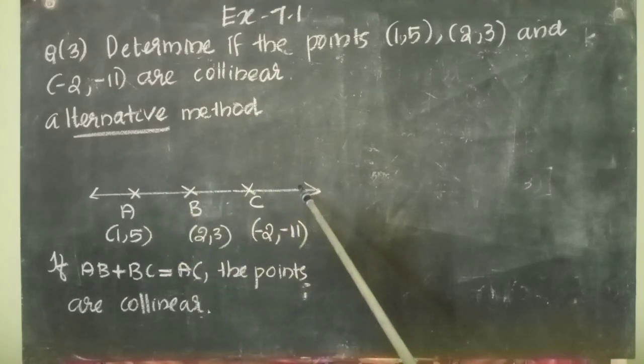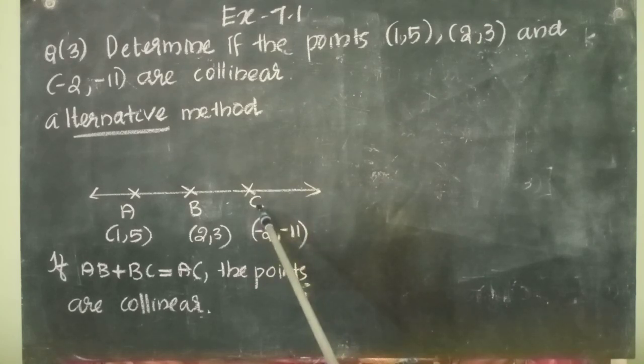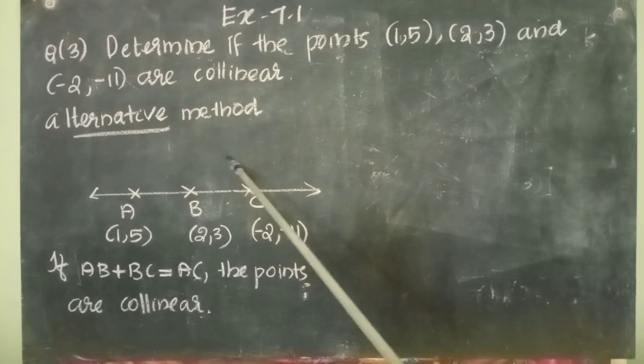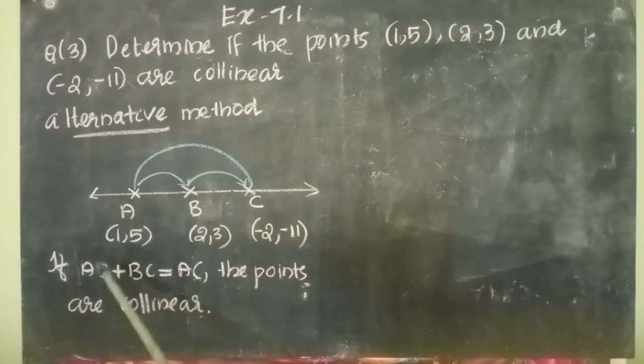If A, B, and C are lying on the same straight line, then the length of AB plus length of BC, if we add, we will get the length of AC. That is, if AB plus BC equals AC, then the points are collinear.